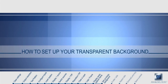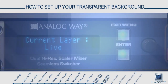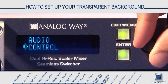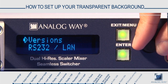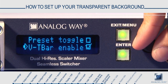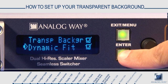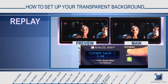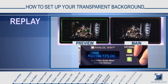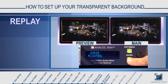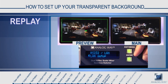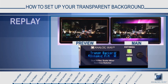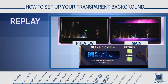How to set up your transparent background. Press menu and scroll down to control. Press enter and scroll down to Dynamic Fit. When Dynamic Fit is selected, you will see the transparent background is also selected. In the control menu, when Dynamic Fit is selected and transparent background follows the selection, you will see that black that would normally be generated by the Pulse is rendered as transparency. This allows you to see layers beneath, such as the background frame.